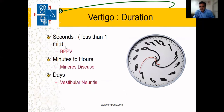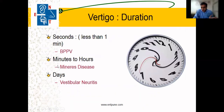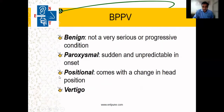Remember — if it is a few seconds, we are dealing with BPPV. If it is a few minutes to hours, we are dealing with Meniere's. If the vertigo lasts a few days, we may be dealing with vestibular neuritis.